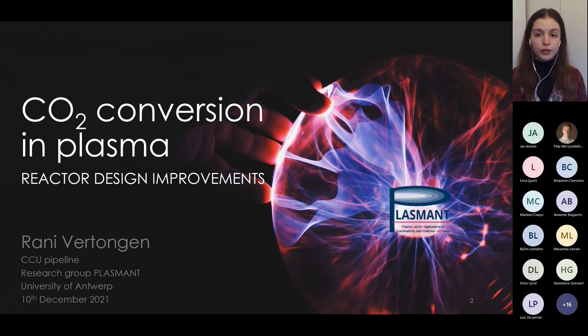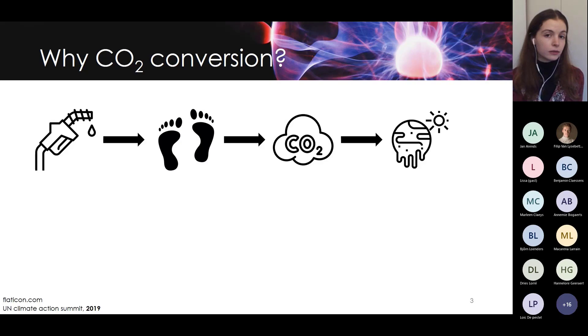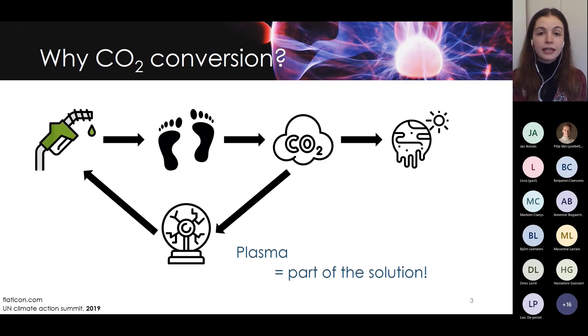Why do we want to convert CO2 in the first place? I think you all already know the answer to that. We as humans use fossil fuels and energy sources that eventually lead to the emission of CO2, a greenhouse gas that leads to global warming and unprecedented climate changes. One way to break this linear chain is to use plasma technology to convert the CO2 into value added chemicals and fuels.